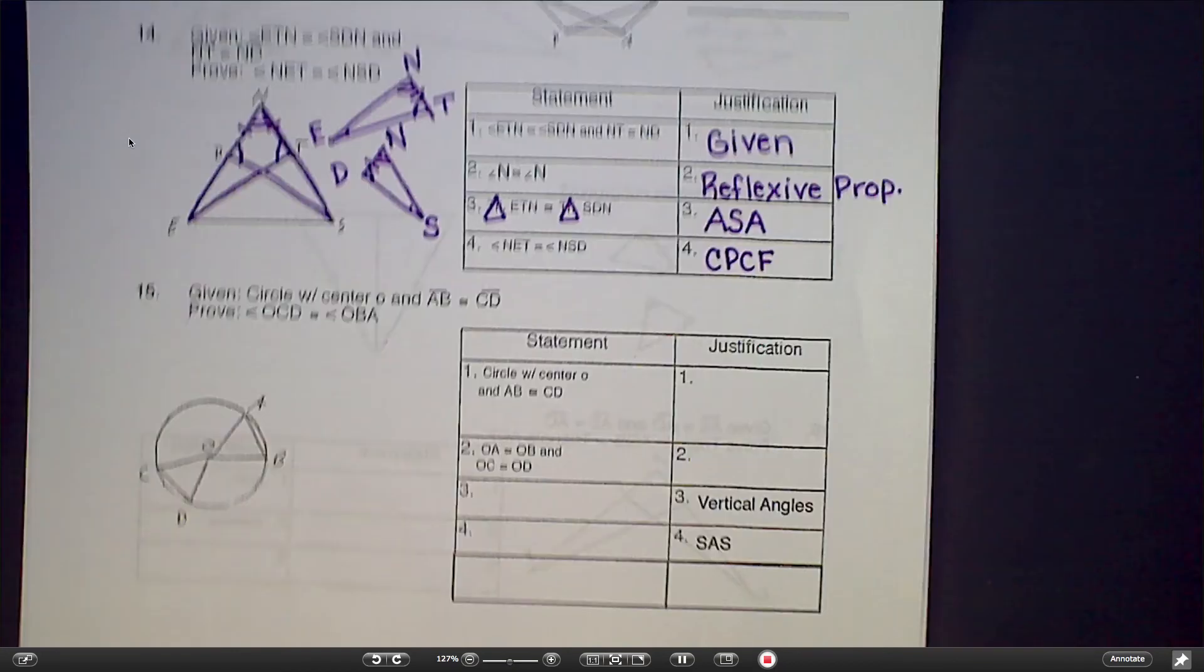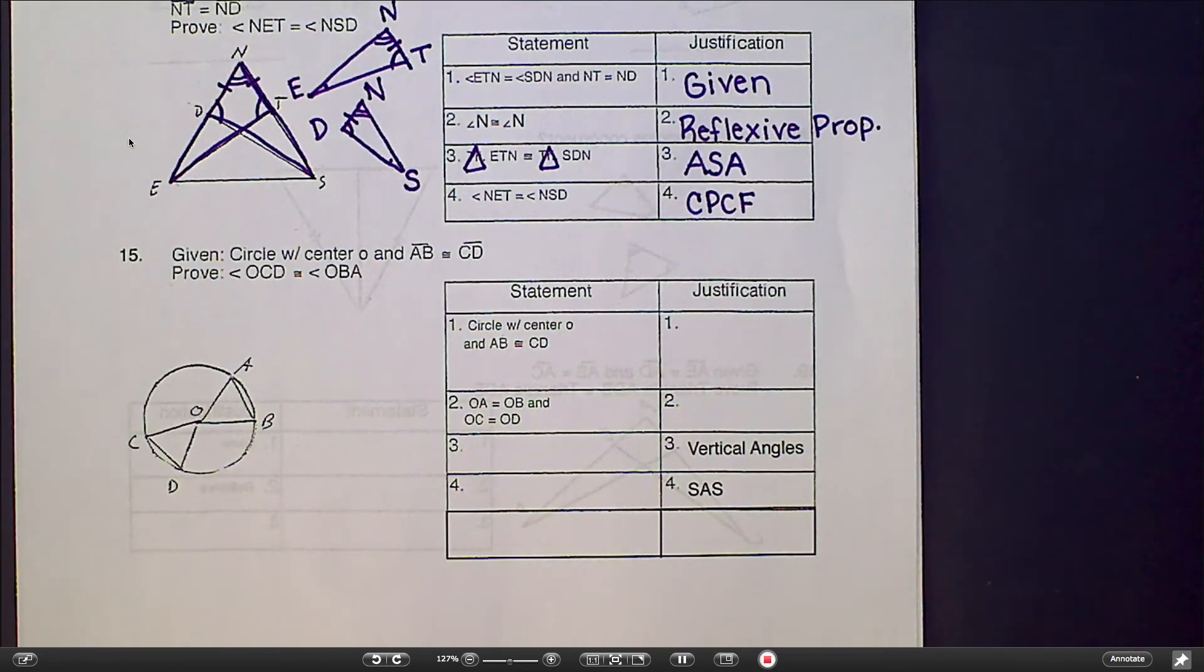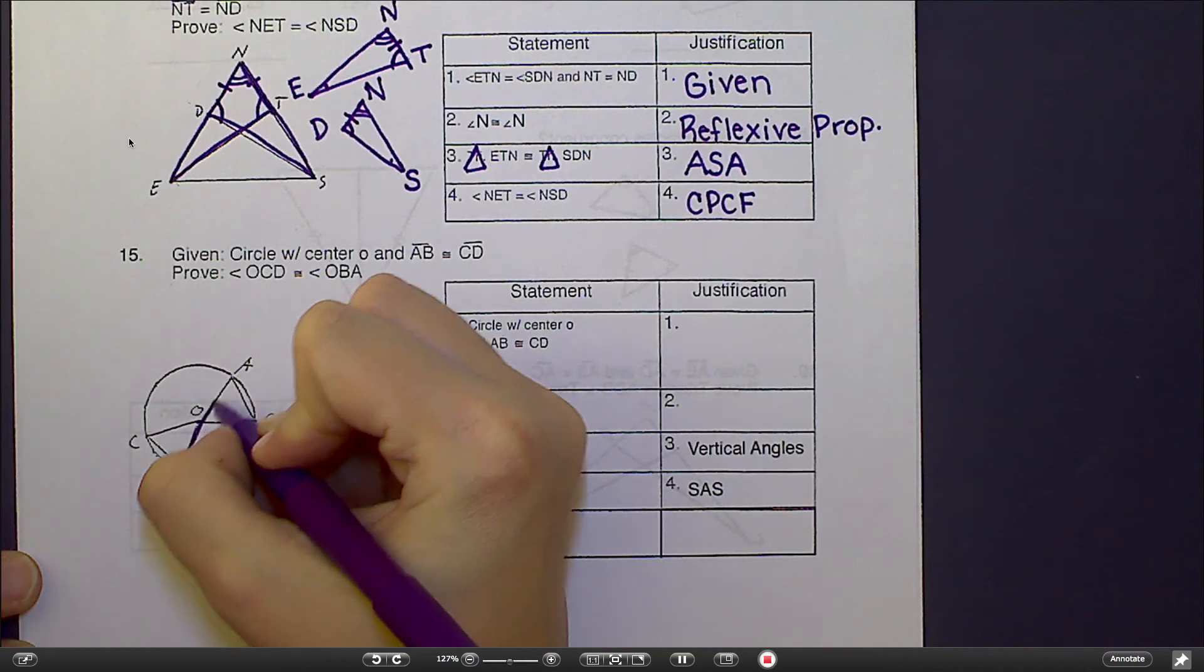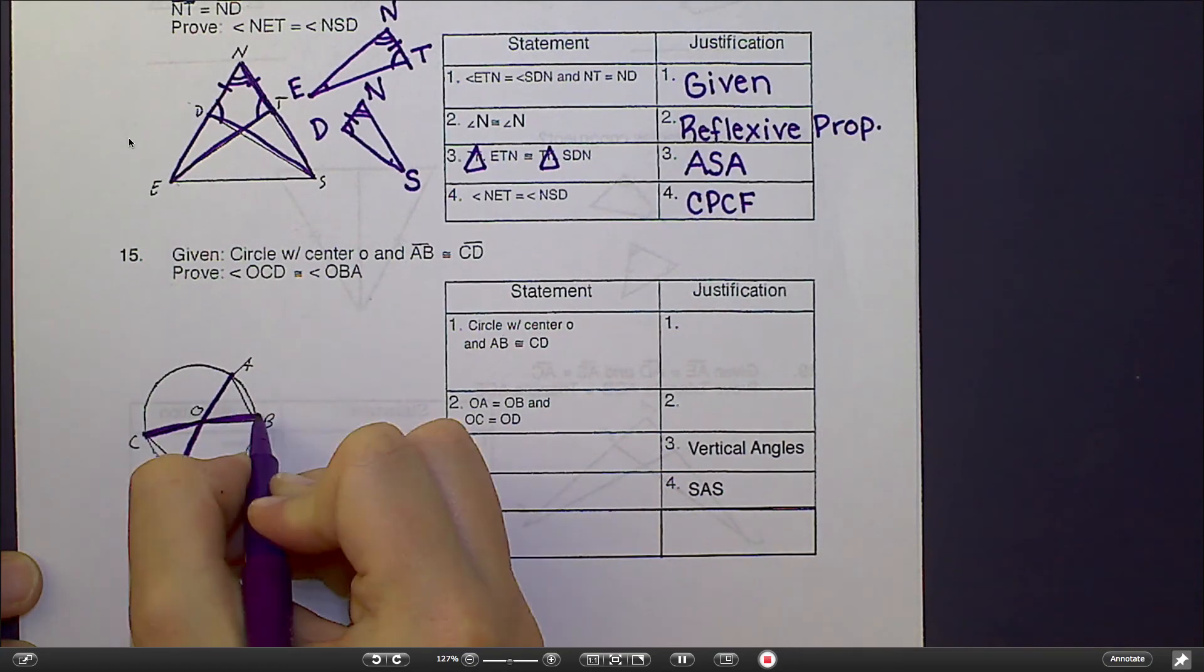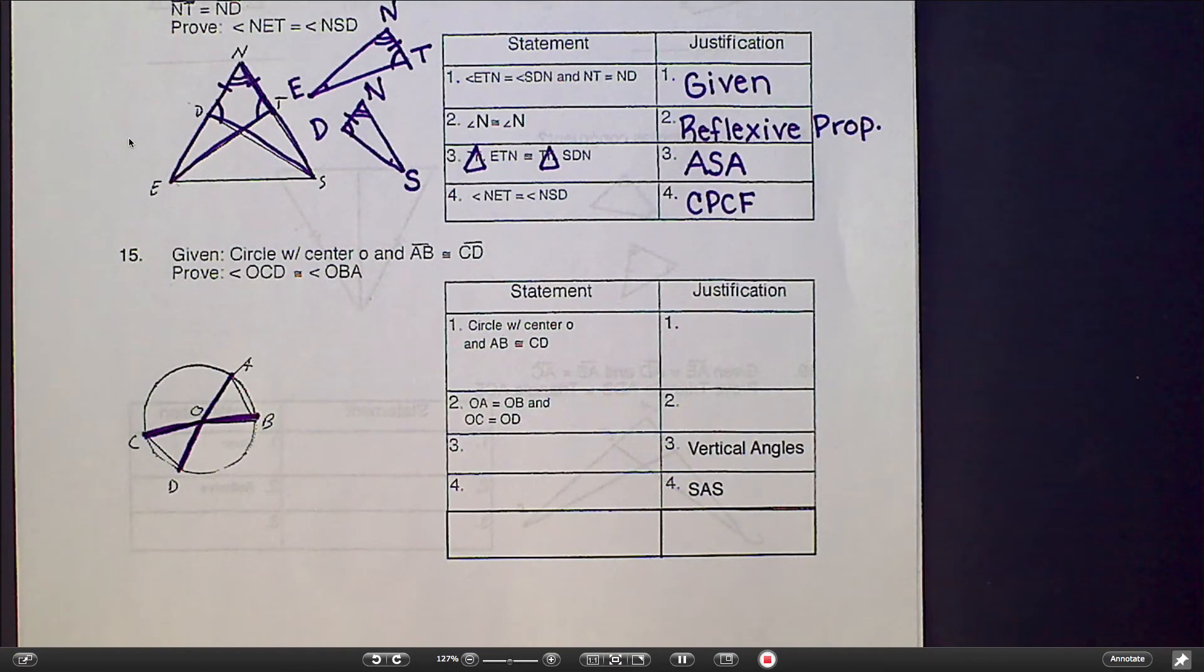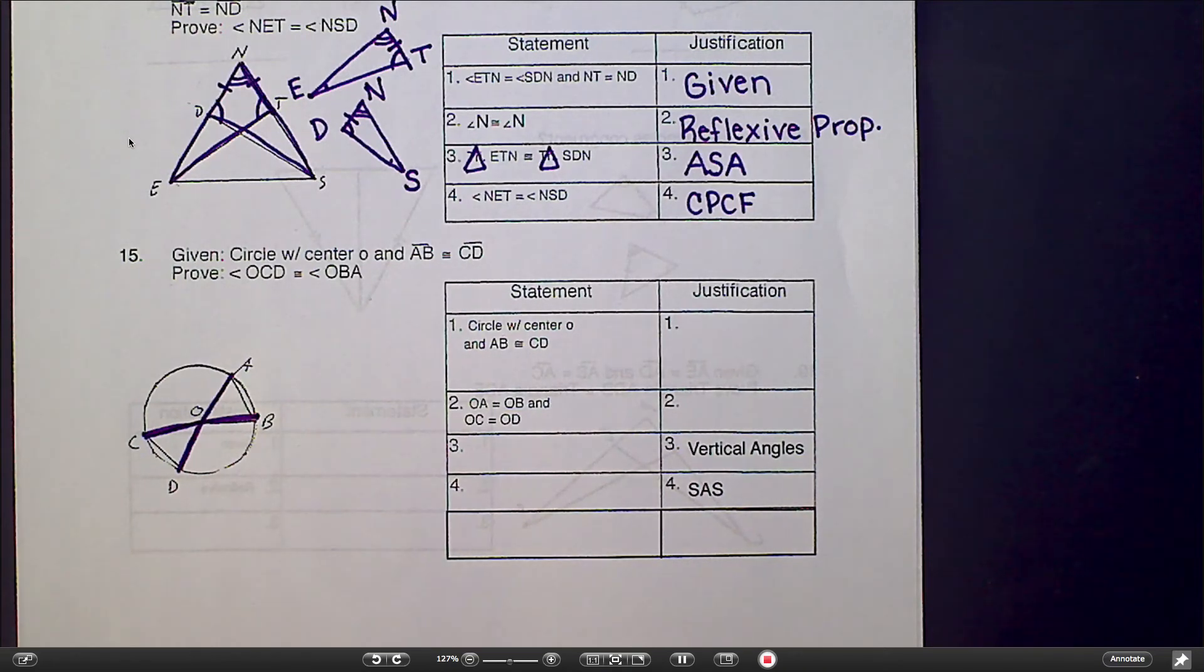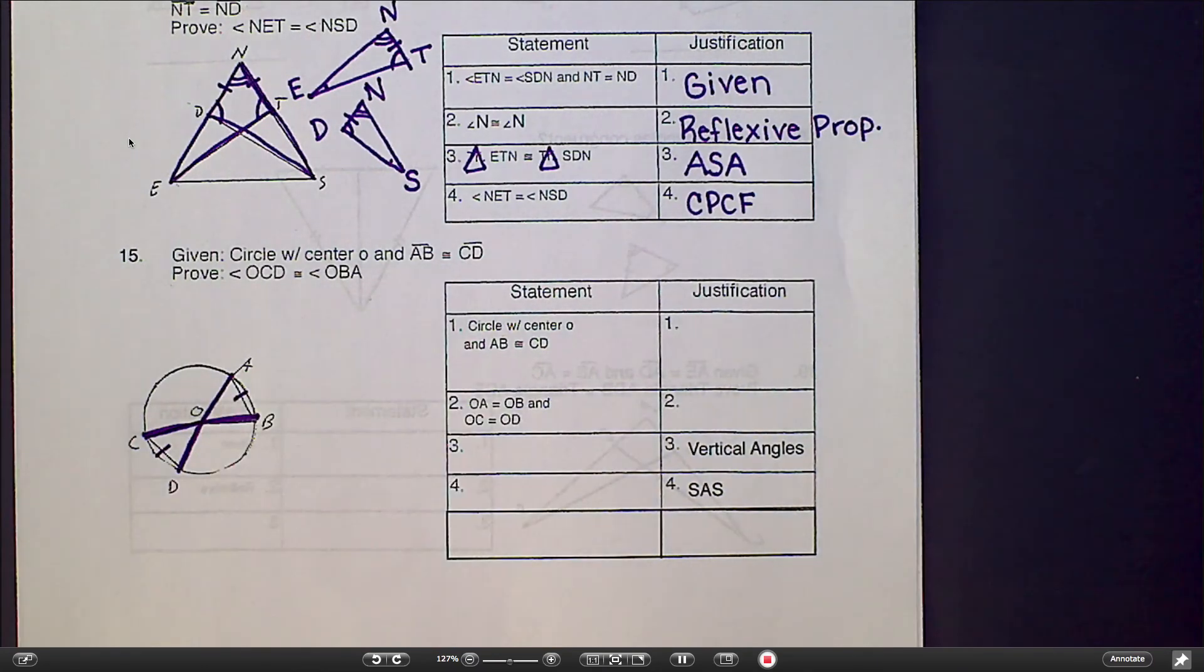Let's look at our last one, number 15. Now, number 15 uses a circle, and there's something pretty tricky about circles that's actually very helpful to you. The first thing I want to clarify is that these should be straight lines. From O all the way to A, that's one straight line, and from C all the way to B, that's one straight line. So we're given that this is a circle, and we're given that AB is congruent to CD. I'm given that this is congruent to this.